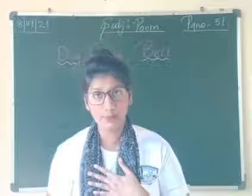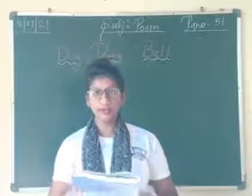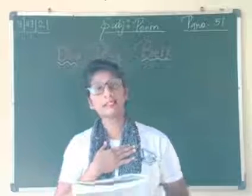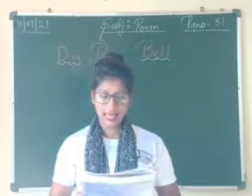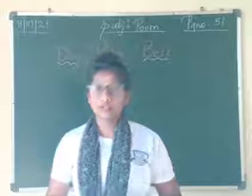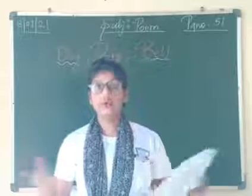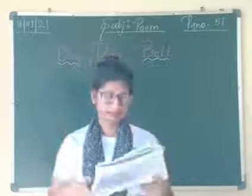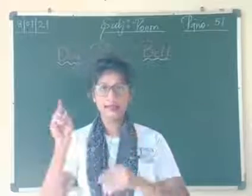First, I am going to read this poem for all of you. After the teacher reads, then I am going to explain it to you. Fine? Our rhyme's name is Ding Dong Bell. Ding Dong Bell, Pussy in the well. Who put her in? Little Tommy Thin. So our rhyme's name is Ding Dong Bell.